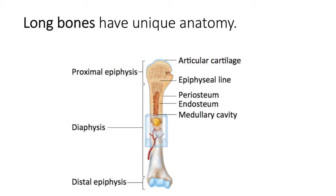One more piece of anatomy: the medullary cavity. Because long bones are long, along the shaft — the diaphysis — there's a cavity in the center called the medullary cavity. Inside that cavity is yellow bone marrow, a high-caloric fatty substance utilized for energy when you're in a state of starvation.